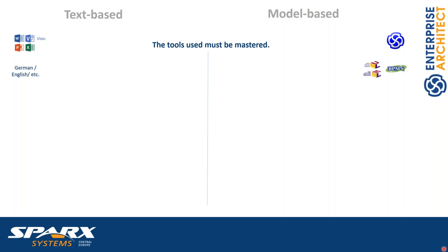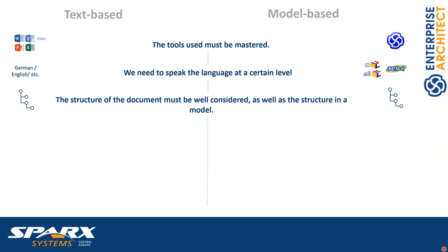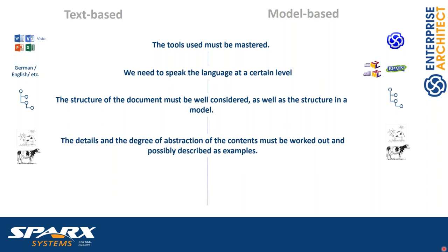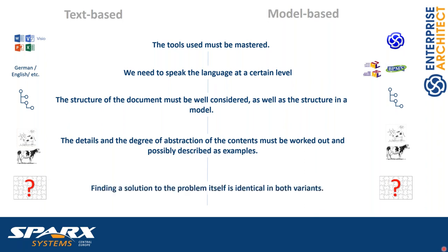Let's have a closer look at the topics we have to deal with in both approaches. First, we have to know the tools and master them. We also have to know the language at a certain level — just as you'd need to learn French or Spanish, you need to learn UML, SysML, BPMN, or ArchiMate. Then we have to think about structure: the chapter structure in text-based, or model structure on the right-hand side. We also have to think about the level of detail and abstraction.